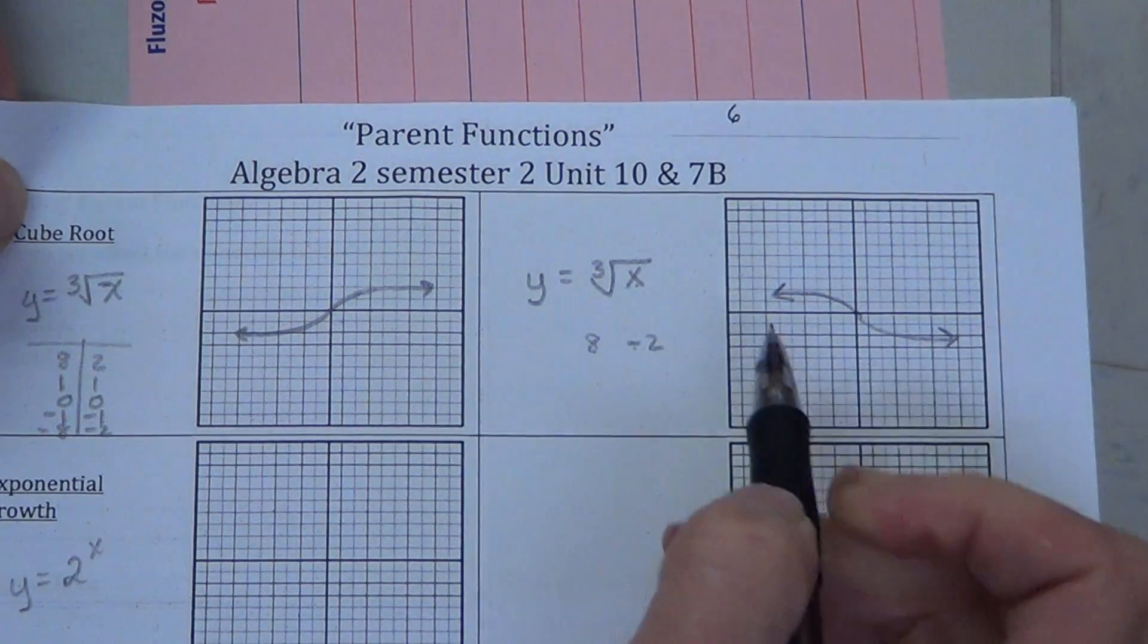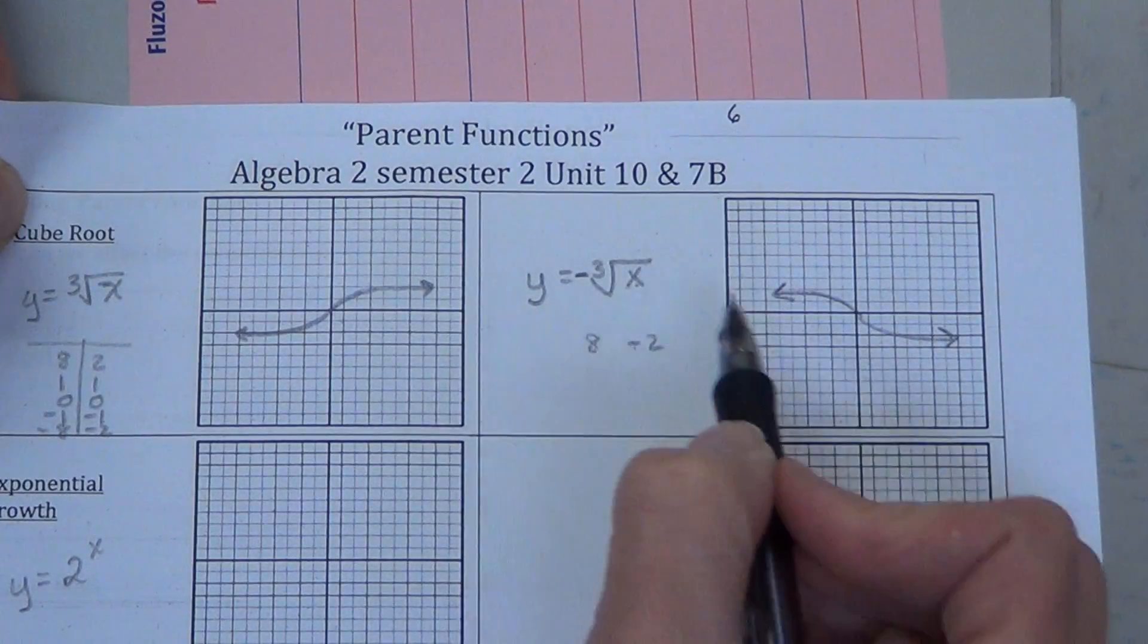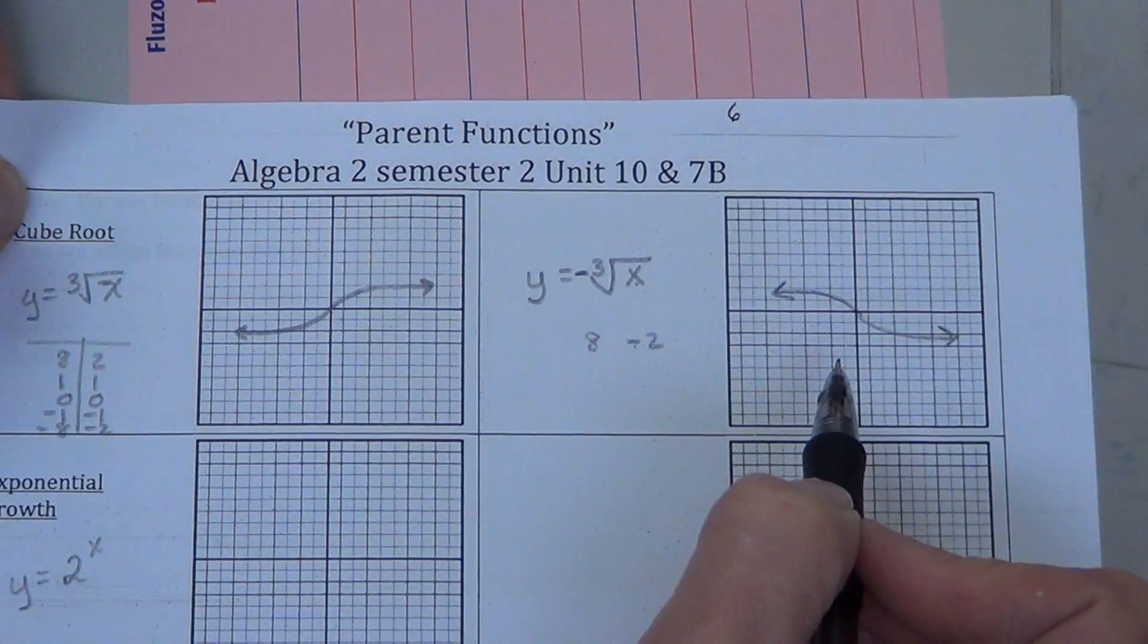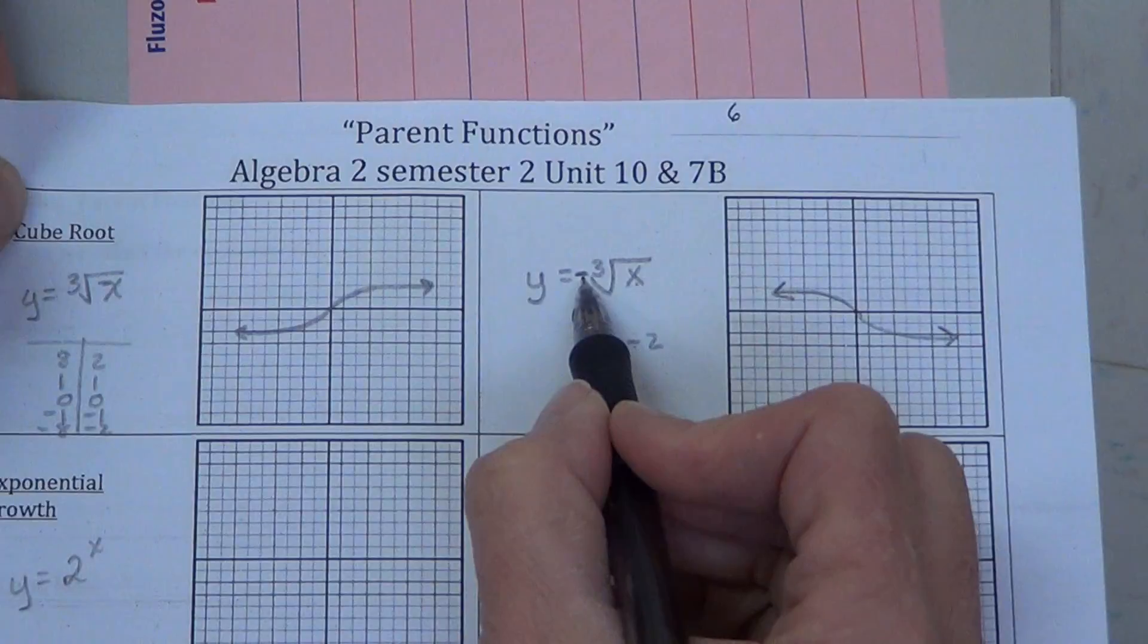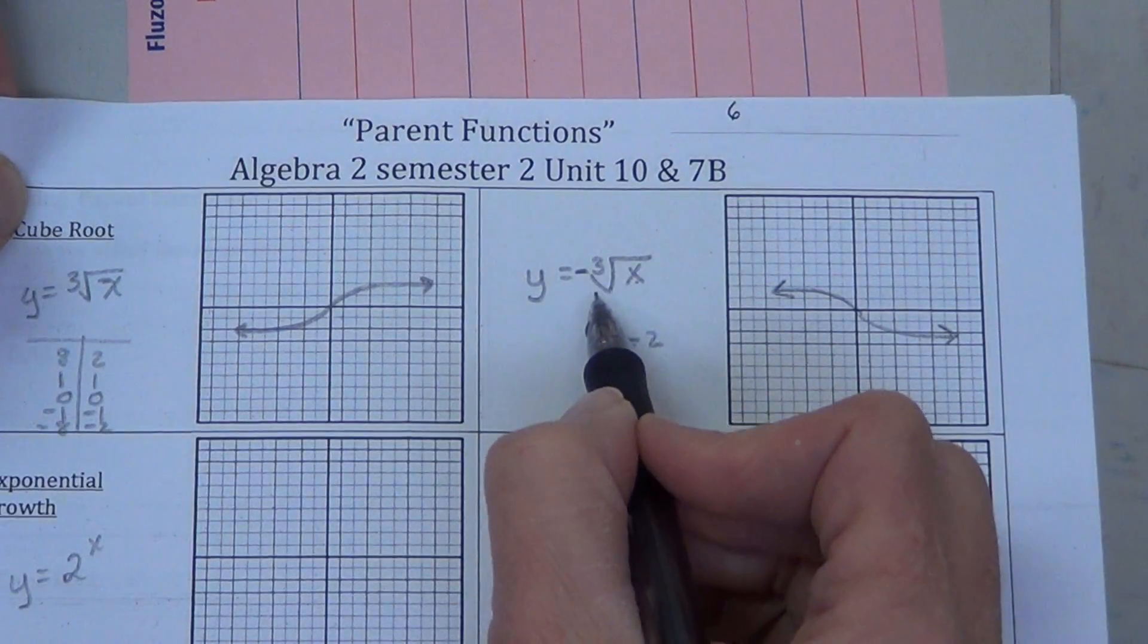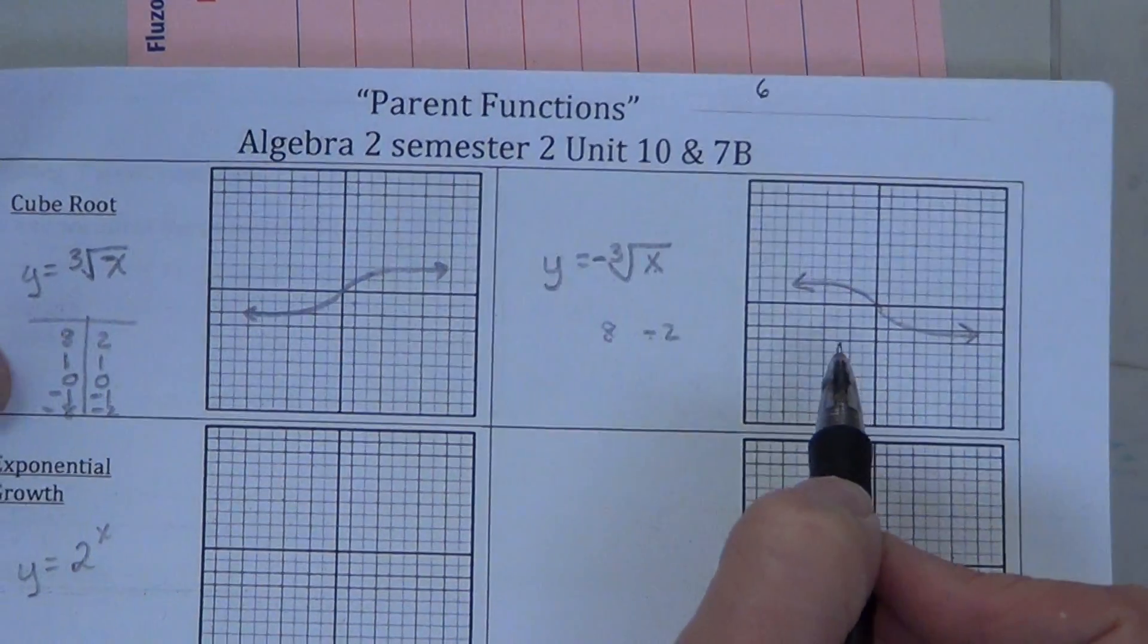we say, well, how would we get the negative in front? Just like before, put the negative. No surprises here. If it reflected the square root function, it will reflect the cube root.